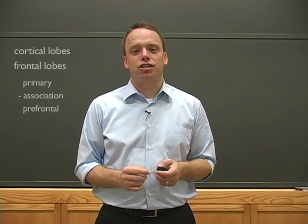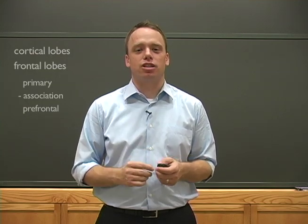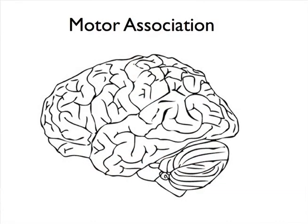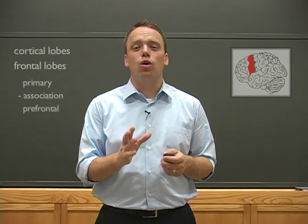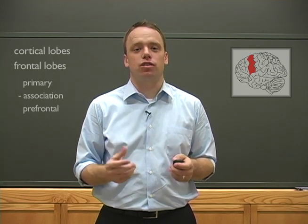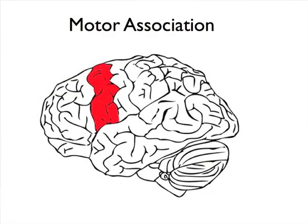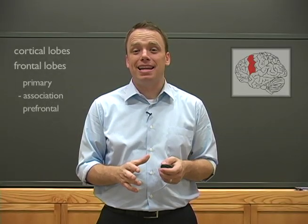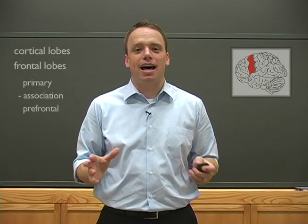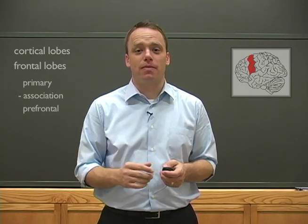Lying just anterior to the primary motor cortex are the motor association areas. The motor association areas consist of a few components, including the supplementary motor area and the premotor cortex, but here we'll talk about the motor association area as one functional unit. That unit has rich reciprocal connections with several areas of the cortex, including the parietal lobes and the prefrontal cortex. The major role for the motor association area is to plan and refine complex movements, but not execute them — remember, that's the job of the primary motor cortex.